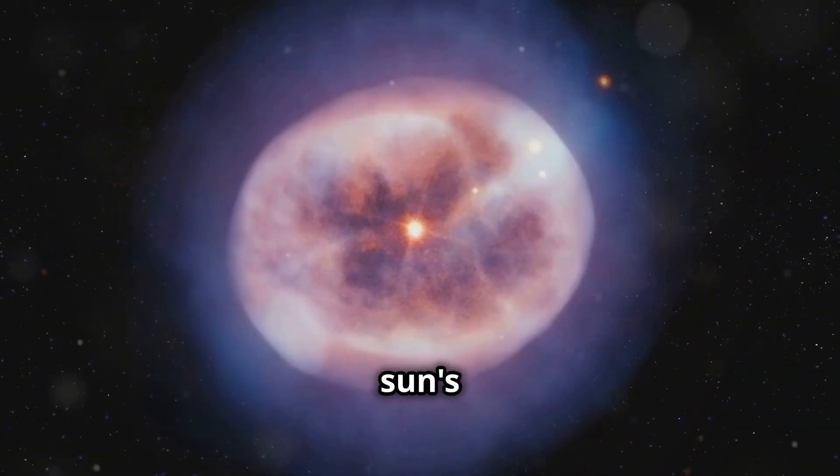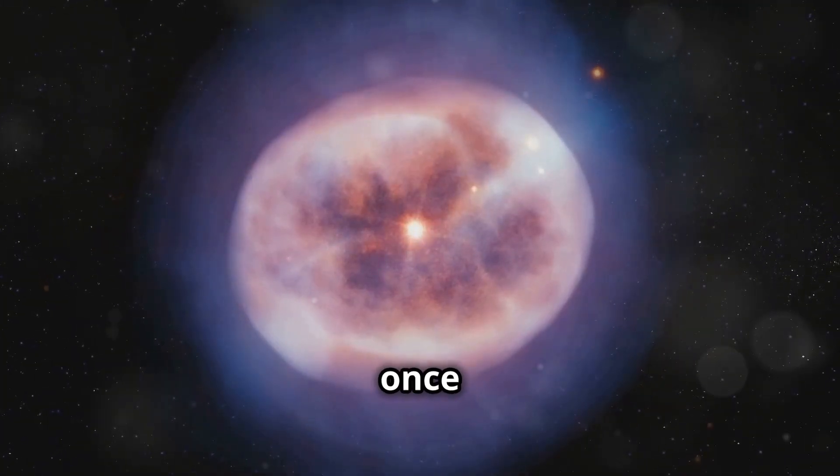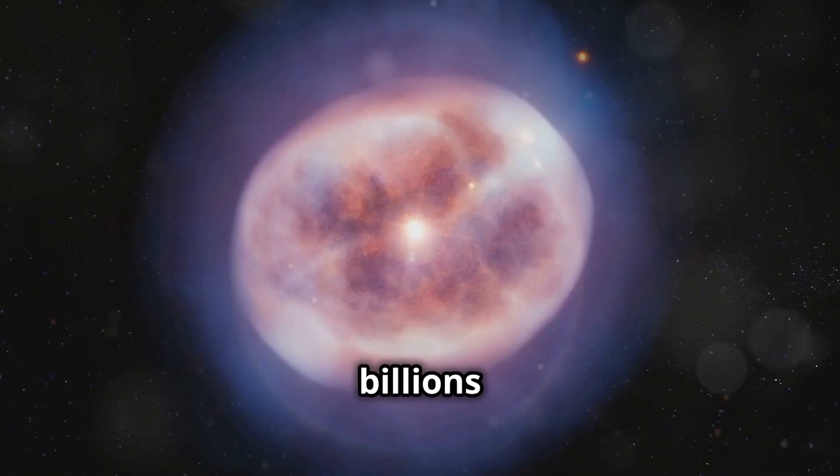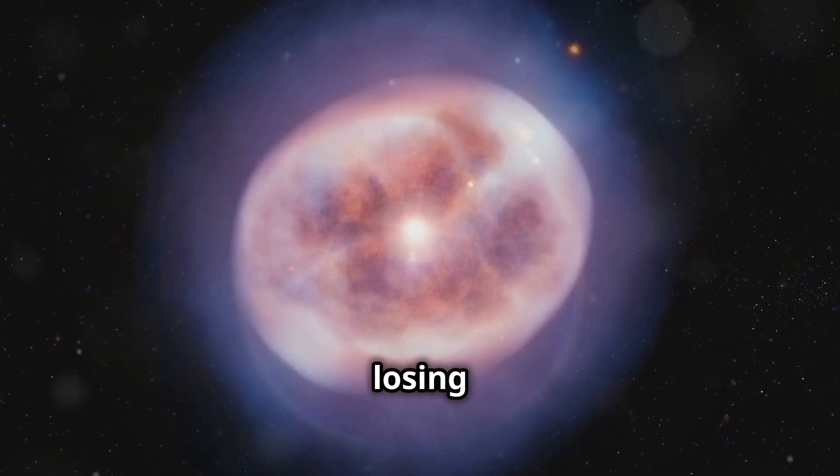This is the final stage of our sun's life, a quiet end to a once vibrant star. The white dwarf will remain in this state for billions of years, gradually losing its heat and energy.